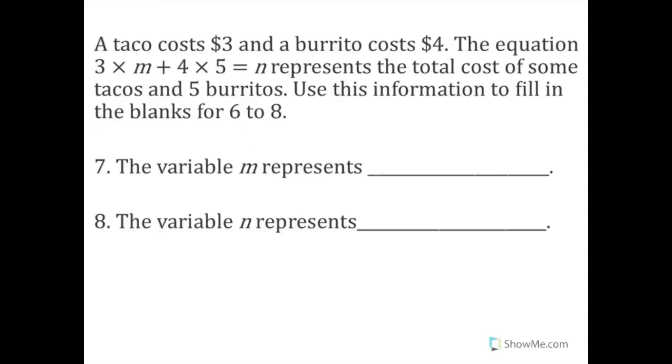So sometimes in algebra, it wants you to tell what the variables represent. And it's really important to understand what the variables represent. Especially when you have a word problem. So that you know, okay, that this variable represents something tangible that I need to find. This is what I mean. So a taco costs $3 and a burrito costs $4. And those better be good tacos and burritos. The equation 3 times m plus 4 times 5 equals n represents the total cost of some tacos and burritos. So use this information to fill in the blanks for 6 to 8. It's supposed to be 7 to 8. It even says 6 to 8 in your workbook, doesn't it? That's weird. It just says 7 to 8. Let's just use 7 to 8.